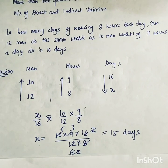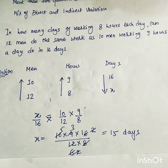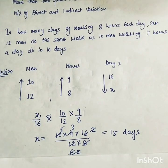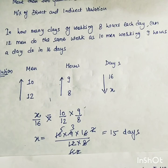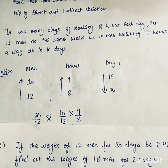So 12 men working 8 hours complete the work in 15 days. This is a very easy and short method to solve compound variation questions. If you have any queries, put them in the comment box. That's all for today, thank you so much.